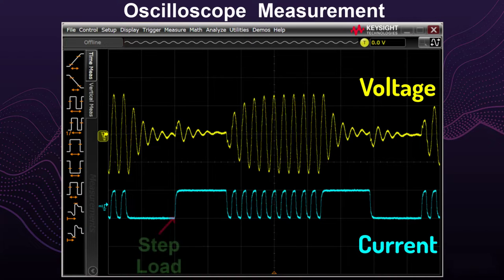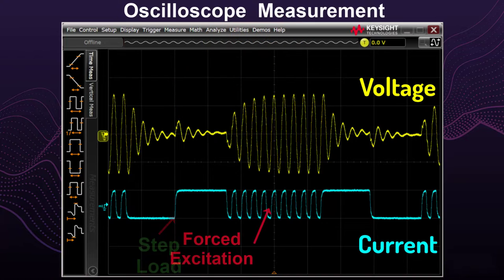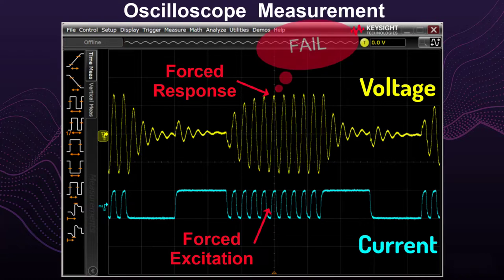Data sheets often specify step load changes in current to determine pass-fail ripple requirements. However, dynamic digital loads switching at the same frequency as a resonance in the power rail can create a forced response that is much larger than the step response. This excessive ringing of the forced response can lead to voltages that exceed device limits and be a source of late-in-the-design EMI/EMC failures.